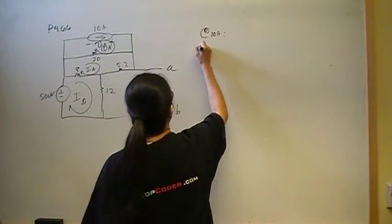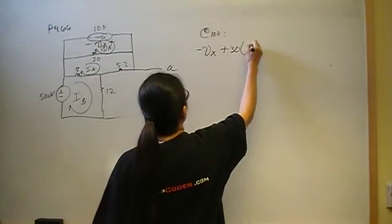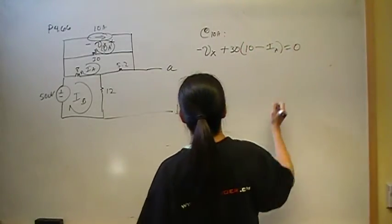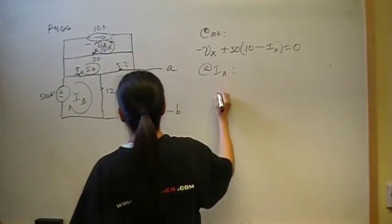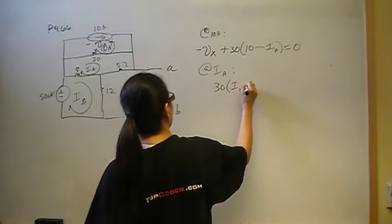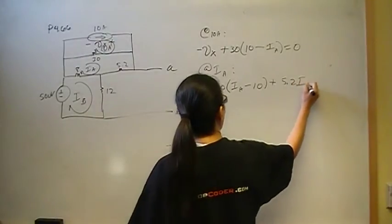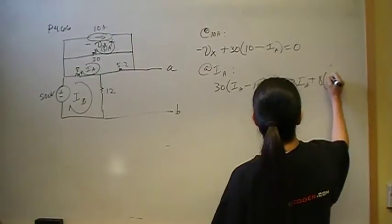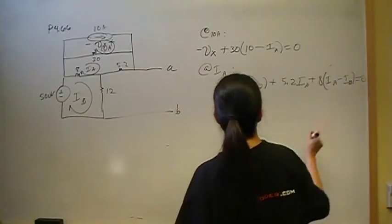So let's write the mesh equation for mesh at 10 amps. So that mesh equation will be minus Vx plus 30 times 10 amps minus I-A. That's equal to zero. So mesh at I-A is going to be 30 times I-A minus 10 plus 5.2 I-A plus 8 times I-A minus I-B. That's got to equal zero.